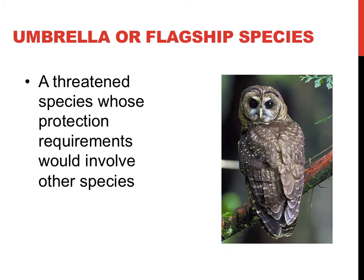Umbrella species and flagship species refer to endangered or vulnerable populations found in locations where, if conservation efforts are expended, many other threatened creatures would also be protected. An umbrella covers or protects other things, and a flagship in an armada is usually the best known or the lead ship. One example of an umbrella or flagship species would be the northern spotted owl. Northern spotted owls live in old-growth forests, and many threatened mollusks — snails, slugs — and salamanders are within the protective boundaries of the northern spotted owl. Due to conservation efforts put forth for protecting the northern spotted owl, many mollusks and salamanders are also protected in these areas.